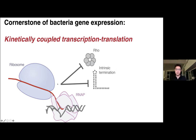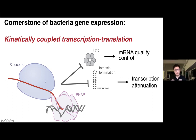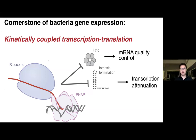This kinetic coupling therefore enables the polymerase to sense, for example, lack of amino acids, which will stall the ribosome and in turn attenuate transcription by modulating termination hairpin formation. This also enables important mRNA quality control mechanisms, whereby a polymerase that accidentally inserts a premature stop codon leads to uncoupling between transcription and translation, allowing Rho to come in and aggressively terminate all transcription that has this type of uncoupling.